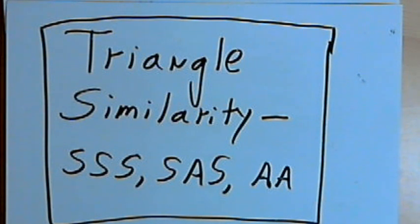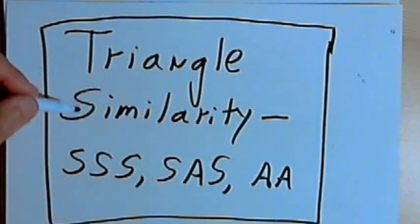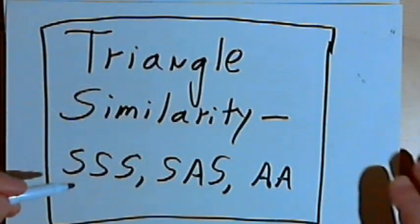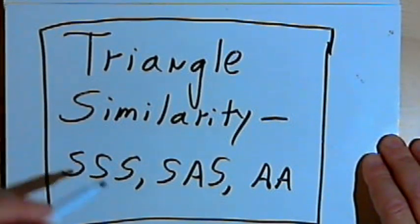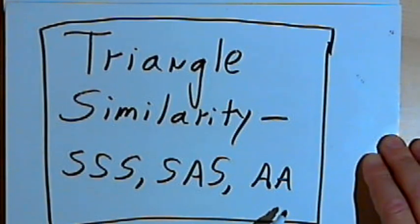This video is provided as supplementary material for courses taught at Howard Community College. In this video I'm going to talk about three kinds of triangle similarity: side-side-side similarity, side-angle-side similarity, and angle-angle similarity.